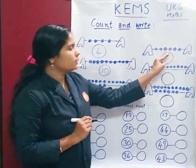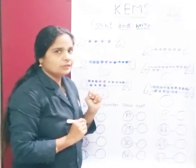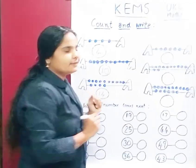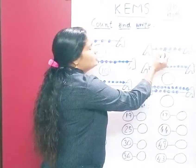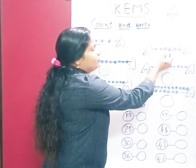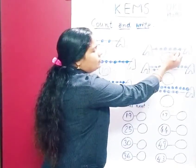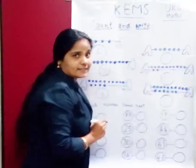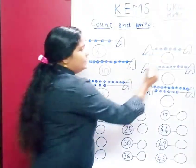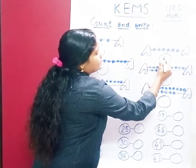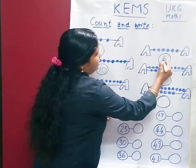How many beats? Count with me: 1, 2, 3, 4, 5, 6. The answer is 15.